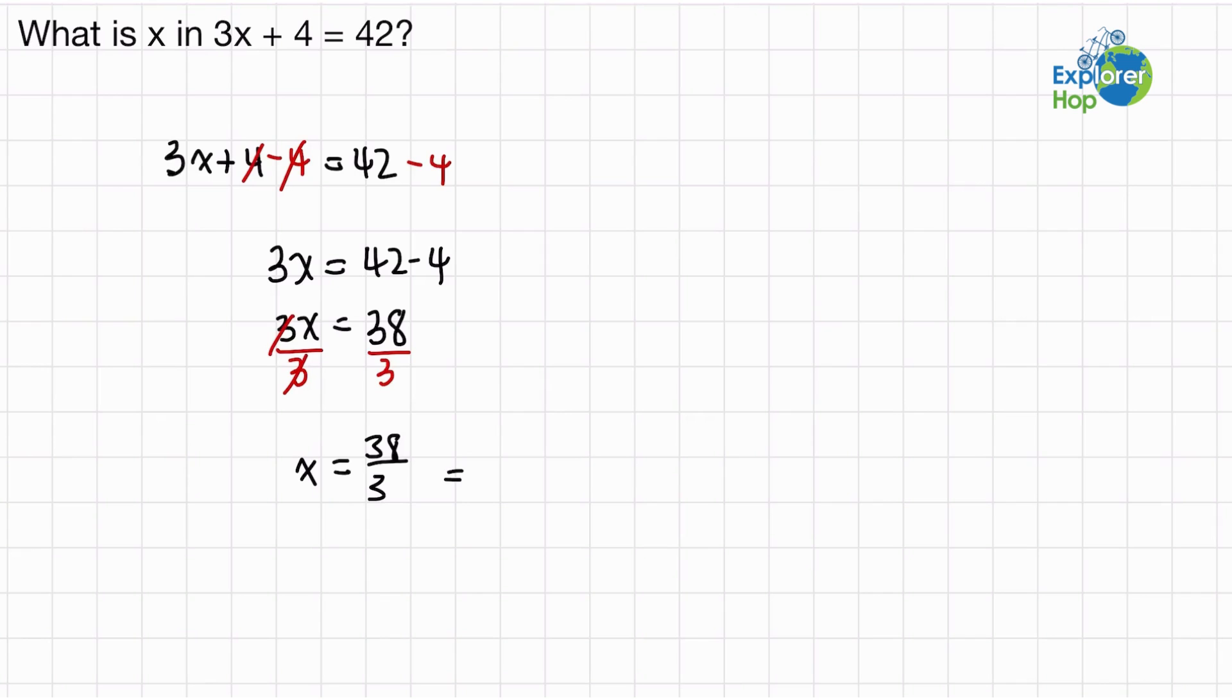And our answer at the end will be a decimal: 12.666666, and then there's a 7. So because we want to get a definitive answer, we're going to round it. So our final answer will be around 12.67.